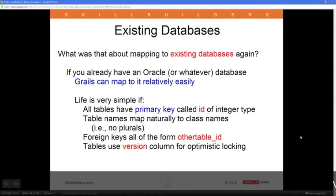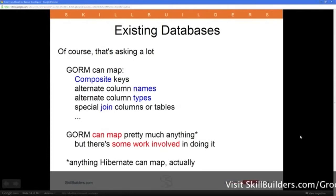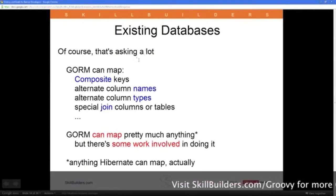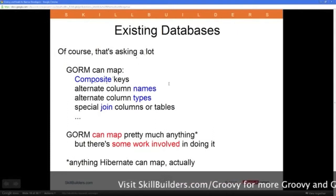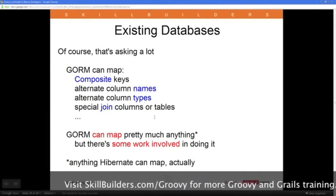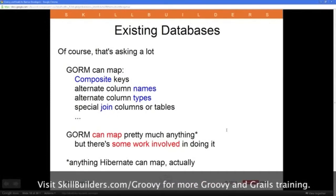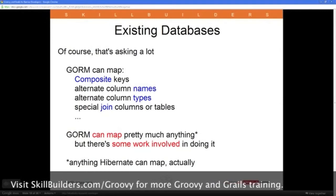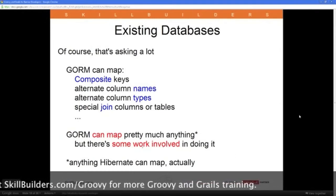Optimistic locking is a very powerful and efficient notion because it doesn't actually lock any rows. For existing databases with lots of requirements, you can do things like composite keys, alternate table or column names, types, and custom join tables. GORM can map pretty much anything, but there may be some work involved.